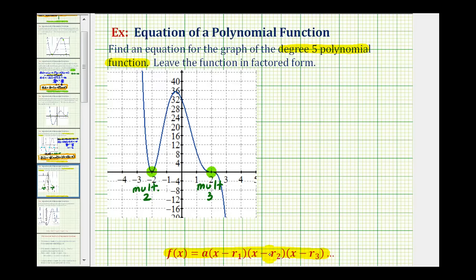Where r sub one, r sub two, r sub three and so on are the roots or zeros of the function. And a is a constant. So to find the value of a, we'll also have to find one more point on the function. Let's go ahead and use the y-intercept here.